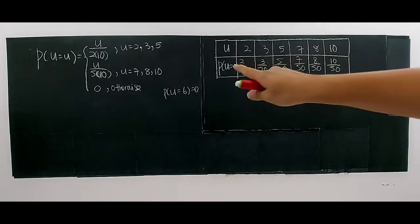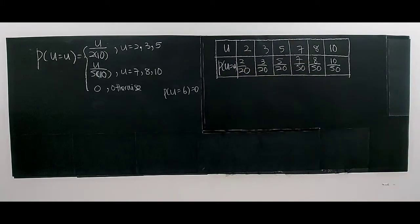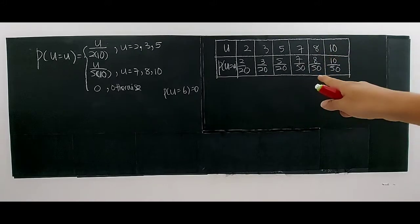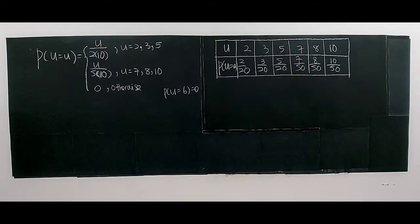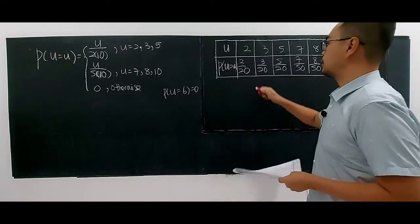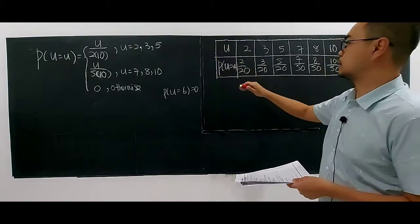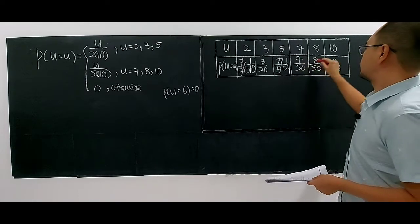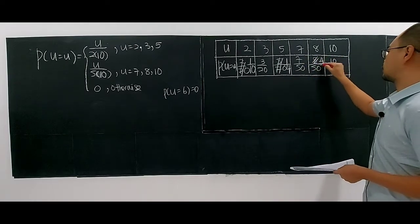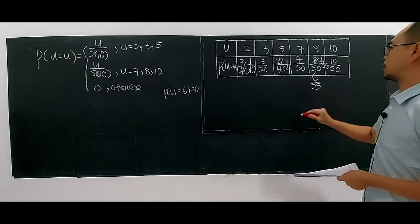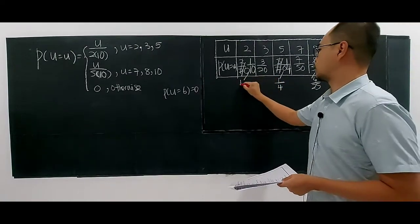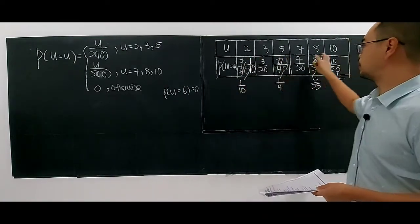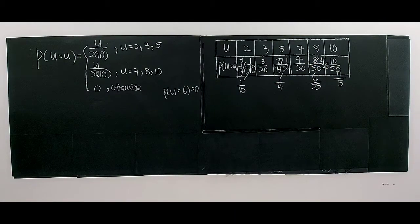You must simplify the fractions. Adding all probabilities gives 1, confirming correctness. In simplest form: 2/20 = 1/10, 3/20 stays as 3/20, 5/20 = 1/4, 7/50 stays as 7/50, 8/50 = 4/25, and 10/50 = 1/5. This completes the probability distribution table.